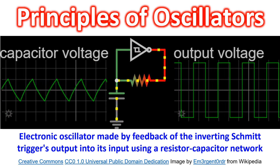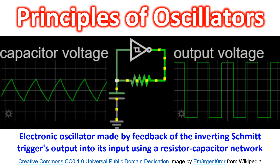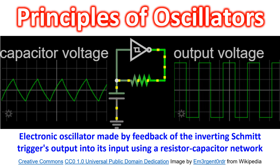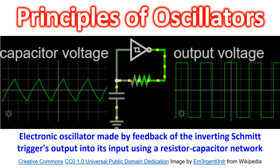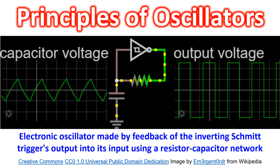In the animation, a resistor-capacitor RC network is used to feed a portion of the output of the inverting Schmitt trigger into its input. A Schmitt trigger is a circuit with hysteresis implemented by applying positive feedback to the non-inverting input of a differential amplifier. It is called a trigger because the output retains its value until the input changes sufficiently to trigger a change.